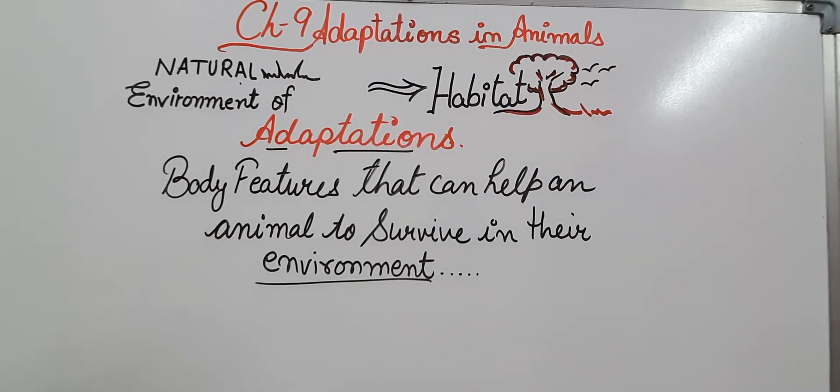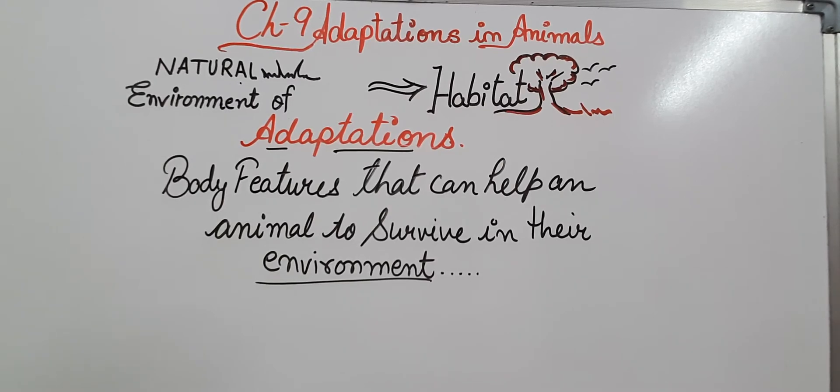Animals that cannot adapt themselves, they die. For example, dinosaurs. It is said that dinosaurs could not survive only because they could not adapt themselves to the changing environment. So they died.